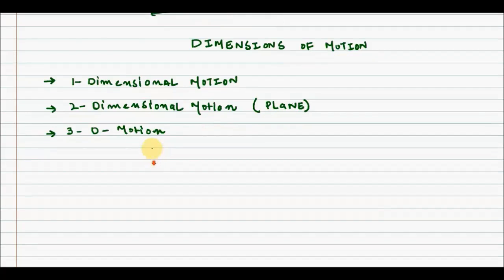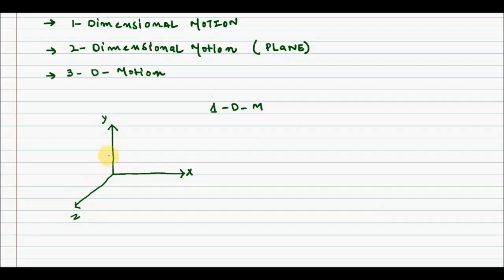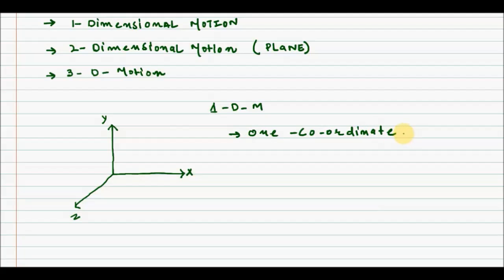Let's discuss one dimensional motion. Drawing the Cartesian coordinate system, we have the x-axis, y-axis, and z-axis. A particle or object is said to be in one dimensional motion if, with the passage of time, only one of the three coordinates is changing. That one coordinate can be either x, y, or z.